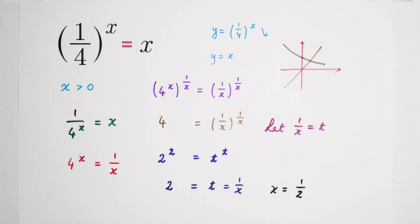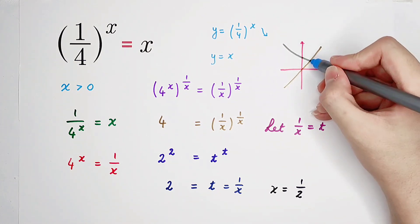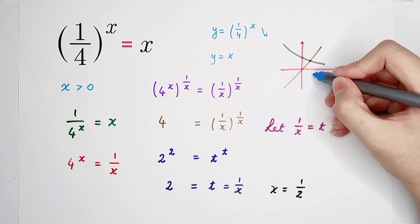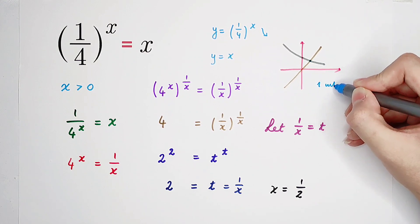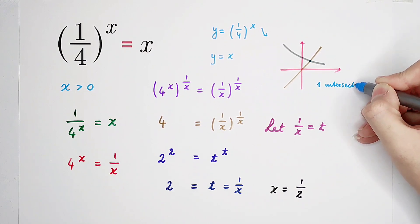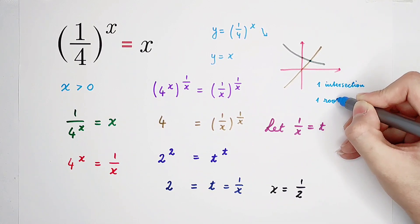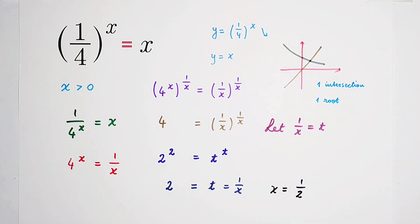So you can see how many intersections are there. Of course, there is only one intersection. That means this one intersection means one root. So that means this equation has only one root, and this root is one over two.